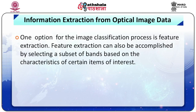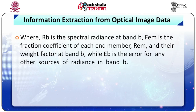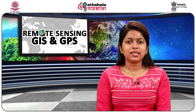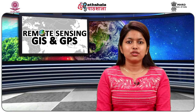Feature extraction can also be accomplished by selecting a subset of bands based on the characteristics of certain items of interest. One method for isolating spectral features is called Spectral Mixture Analysis (SMA). SMA is a structured approach that addresses the mixed pixel problem and other factors that contribute to image quality such as calibration and light conditions. The SMA equation for each band is: RB is the spectral radiance at band B, FEM is the fraction coefficient at each end member, RM is the weight factor at band B, and EB is the error from any other sources of radiance in band B. This method works best when the spectral diversity of the scene is not complex and the spectral features of interest are minor.